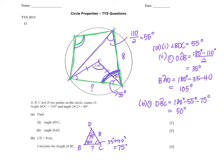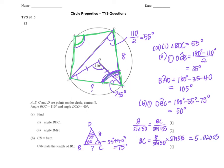I can use the sine rule. Using the sine rule: 8 over sine of 50 equals BC over sine of 55 degrees. BC = 8 over sine 50 times sine 55, and the answer is 5.02005, rounded off to 5.02 cm.